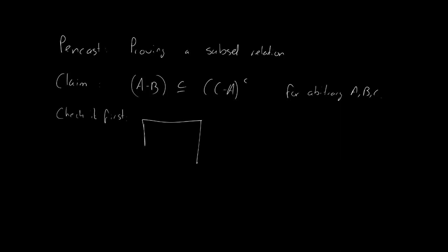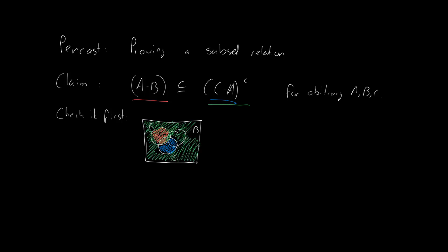Let's check that with a picture first. We have the three sets A, B, and C. A minus B is — that's right — it's this whole part. Now what about C minus A? C minus A is that part, and then the complement of that — well, that's quite a lot. Based on just the picture it seems that the red part is indeed a subset of the green part.